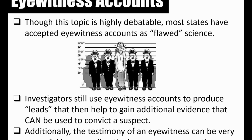This can help investigators gain additional evidence that then can be used to convict the suspect. So while we can't use eyewitness accounts on their own, we can use the information that eyewitnesses provide to get leads. Those leads often lead to more additional evidence, and then that evidence can be brought into the courtroom and used to convict someone of a crime.